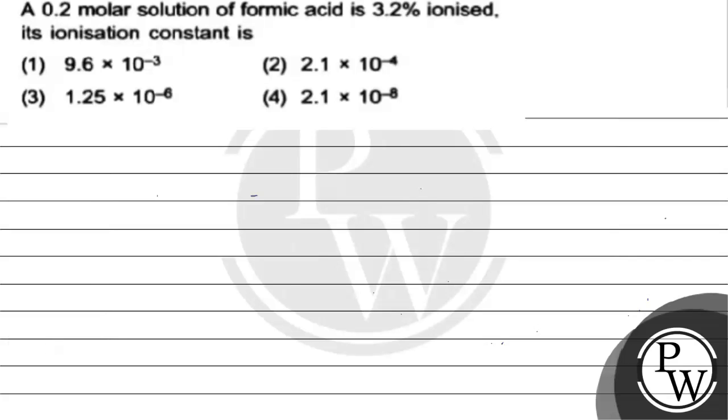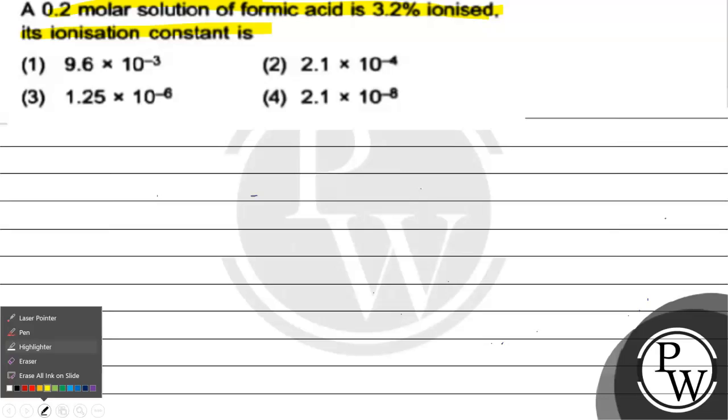Let's read this question. A 0.2 molar solution of formic acid is 3.2% ionized. Its ionization constant is: Option 1: 9.6×10⁻³, Option 2: 2.1×10⁻⁴, Option 3: 1.25×10⁻⁶, Option 4: 2.1×10⁻⁸.